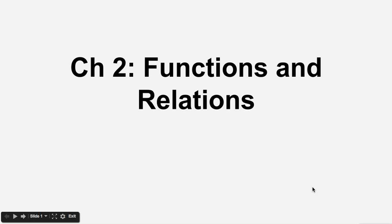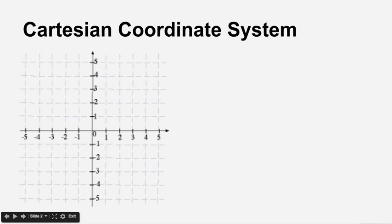The first thing is the Cartesian coordinate system. A function and a relation will be graphed on a Cartesian coordinate system, which as you can see is two axes. The x-axis is horizontal and the y-axis is vertical.